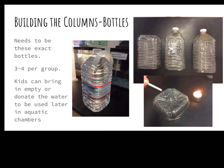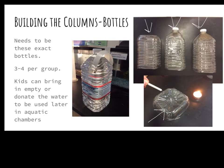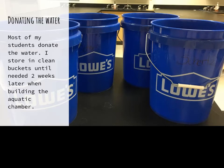Students can either bring in the bottles empty after drinking the water, or bring them in full and donate the water to be used later in the aquatic chambers. They're going to cut the bottles using a picture guide to help them build the eco-columns, and they're also going to use a poker and a tea light to poke holes in the sprinkler, which goes on the very top of the column. I bought dedicated buckets from Lowe's that are only used for eco-column water, and I store it covered with plastic wrap for two weeks until we need it to build the aquatic chamber.